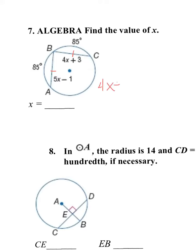4x plus 3 equals 5x minus 1. You subtract 4x from both sides. And you have 3 equals x minus 1. Add 1. And x equals 4. And that's what they want, the value of x.